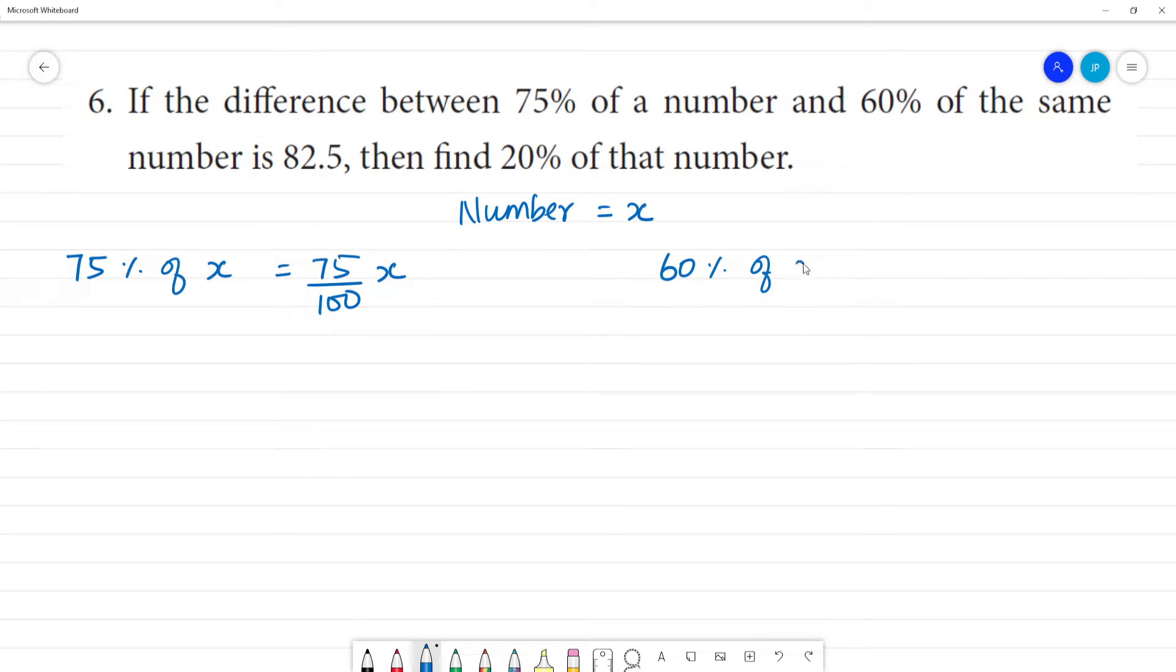60% of x equals 60 by 100 into x. The difference between them equals 82.5. Taking the same denominator 100, we get 75x by 100 minus 60x by 100 equals 82.5. Simplifying the numerators, 15x by 100 equals 82.5.